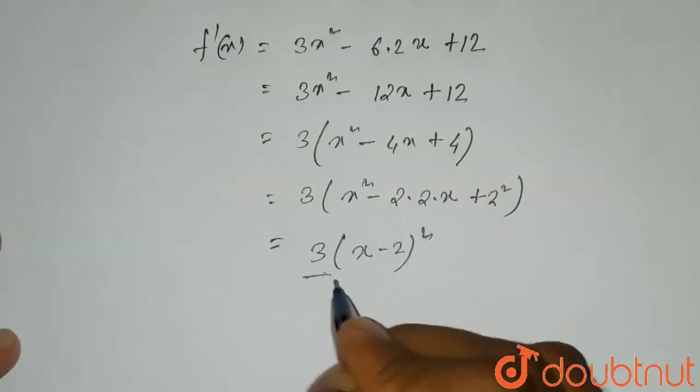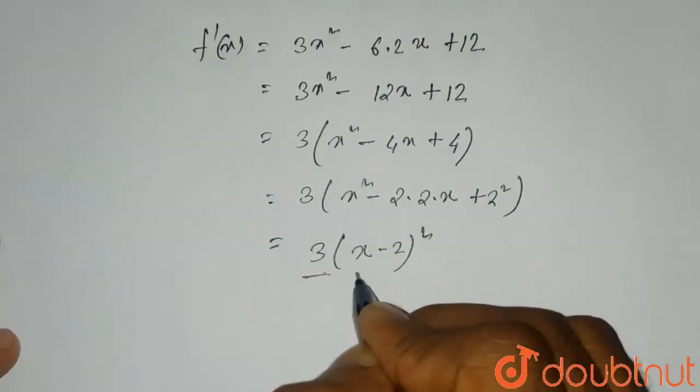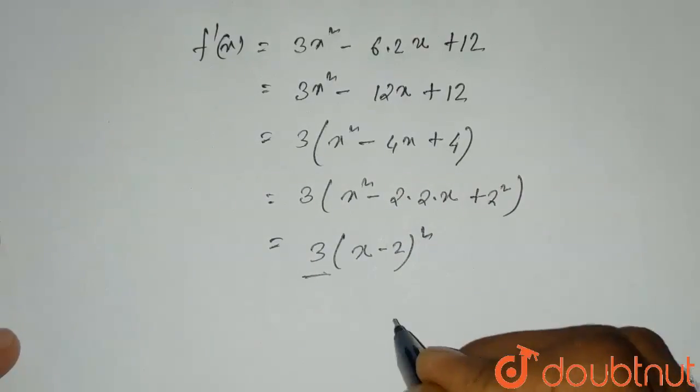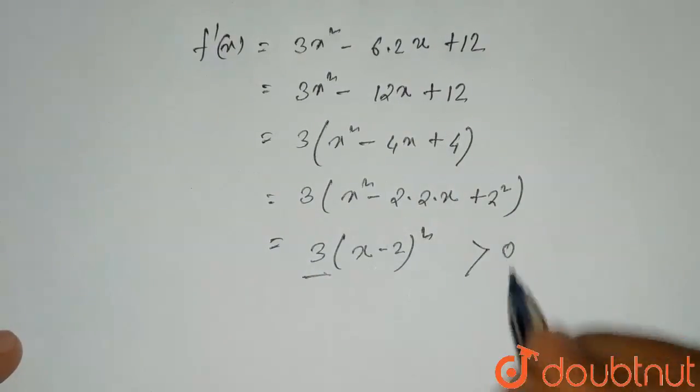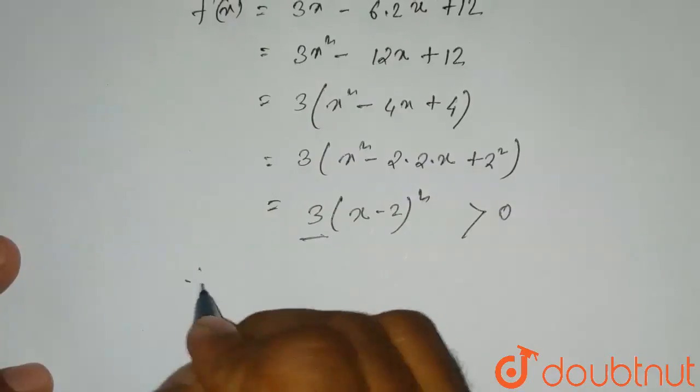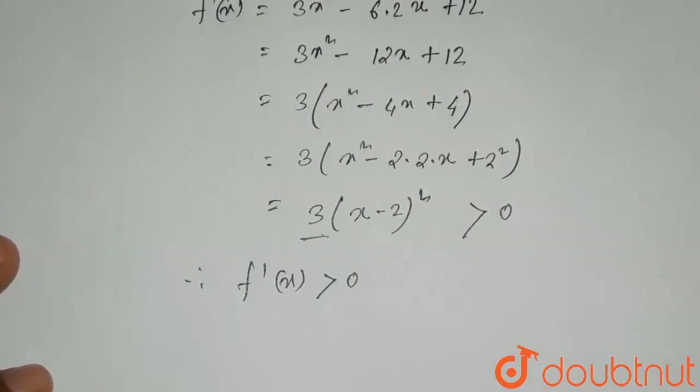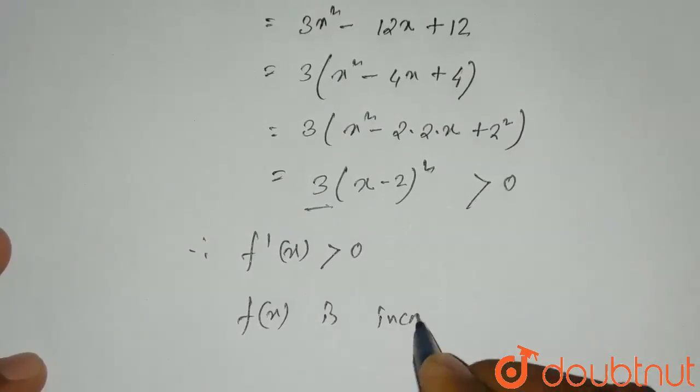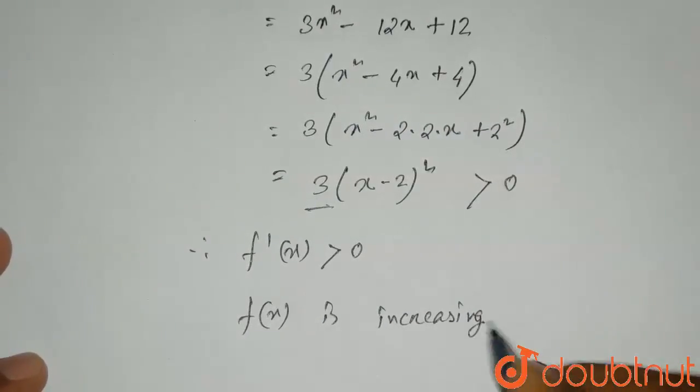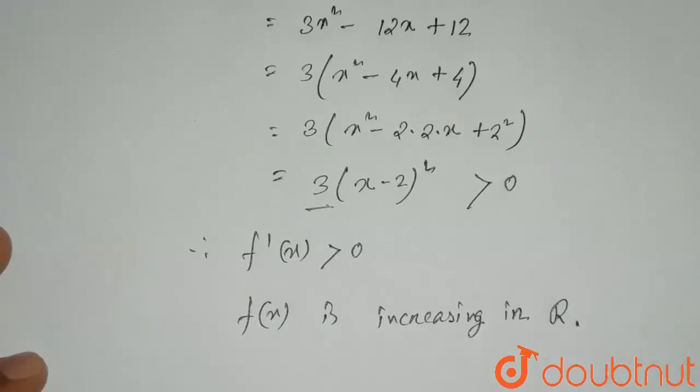Now 3 is a positive value and (x - 2)² is also a positive value because a square value can never be negative. So this value is greater than 0. Therefore f'(x) > 0, which means f(x) is increasing in R.